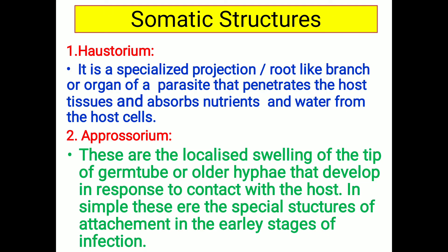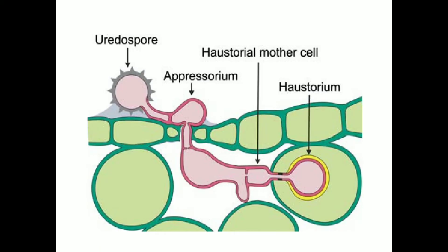Next one is the appressorium. These are the localized swellings at the tip of a germ tube or older hypha that develop in response to contact with the host. In simple terms, these are special structures of attachment in the early stages of infection. In the case of rust fungi, from the uredospore — that initial organ of the fungi that comes in contact with the host — the structure that first makes contact with the host surface is called the appressorium.